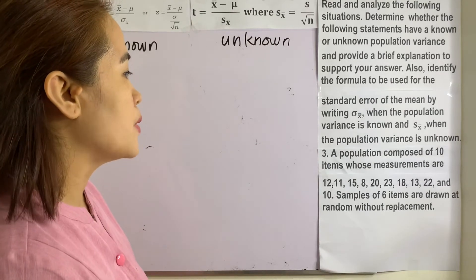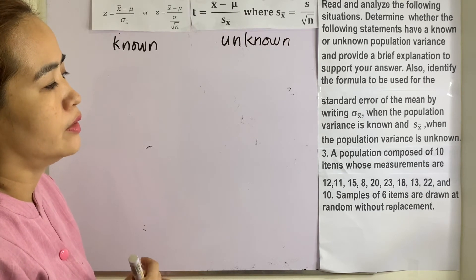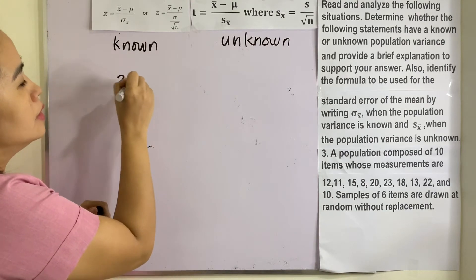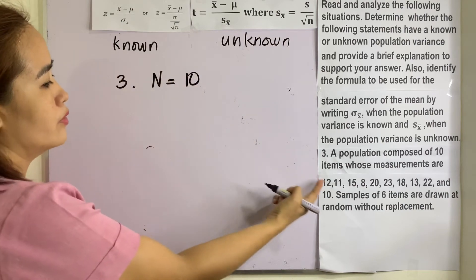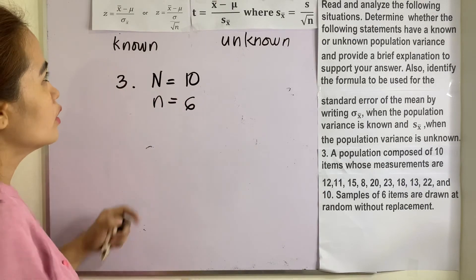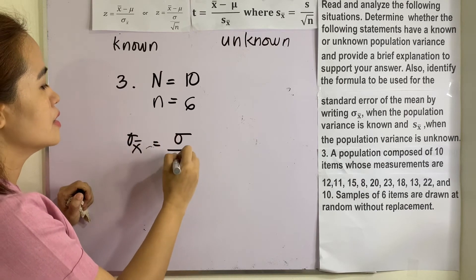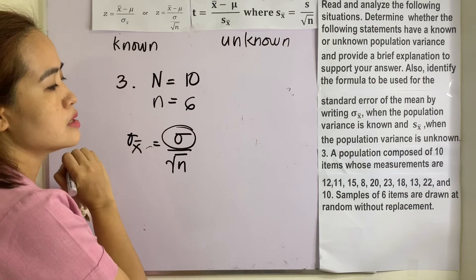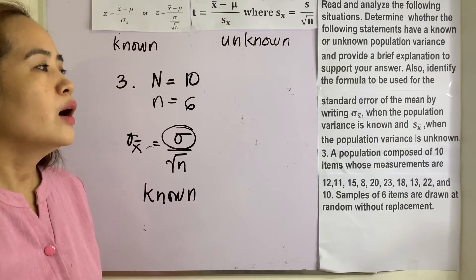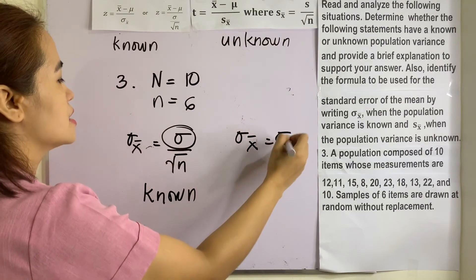Number 3: a population composed of 10 items whose measurements are 12, 11, 15, 8, 20, 23, 18, 13, 22, and 10. Samples of 6 items are drawn at random without replacement. Here, N equals 10, and we have all the elements of the population. Our sample size small n is 6. We can compute the variance since we have all the entries, so this is a known population variance. The standard error of the mean is the population standard deviation divided by the square root of n.